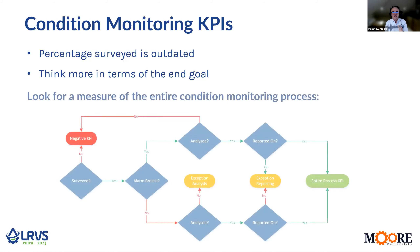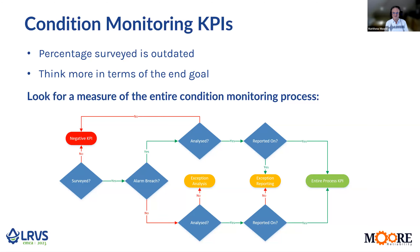So we need to think more in terms of the end goal, and in condition monitoring that end goal is to make sure that we've assessed the machines. Going through this workflow: the first thing we do is look at what has been surveyed, and if it hasn't been surveyed, it's a negative KPI — this isn't just somebody going out and collecting data, but also the fact that duty and standbys aren't being switched over. Then the first part of analysis would be looking for an anomaly or an alarm breach. Whether this be a human analyst or an automated analysis, we'd be looking: has it breached an alarm threshold? If it has, have you analysed it? Because if you haven't, you've now got a negative KPI. If you have analysed it and reported on it, you've carried out what we call exception reporting — you're only reporting on the things which have an anomaly — and that completes our process, giving us an entire process KPI for condition monitoring.